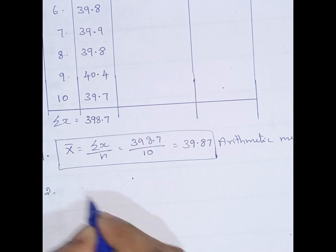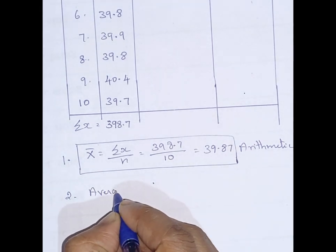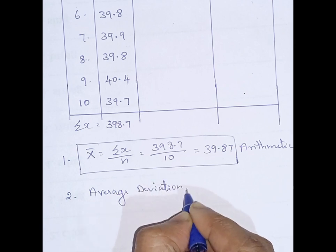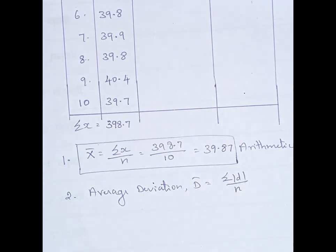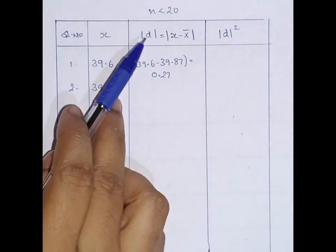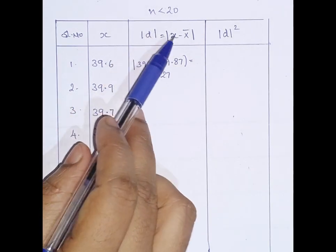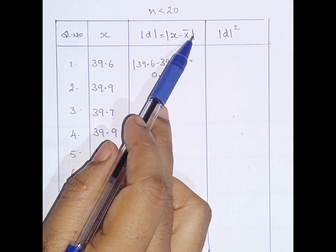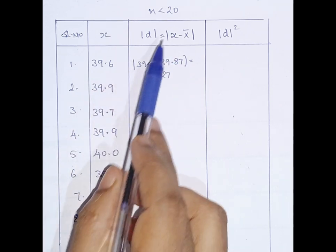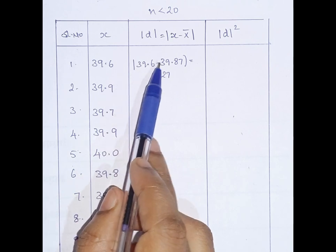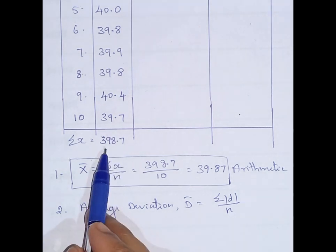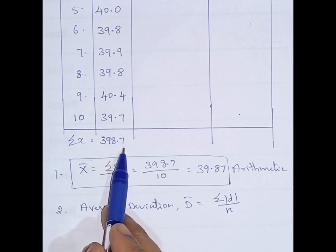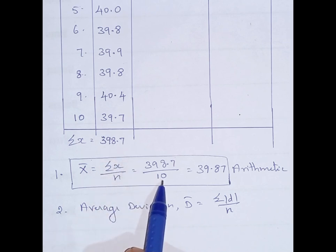The second formula is average deviation. The average deviation formula is D̄ equal to summation of modulus of D divided by n. As we need modulus of D, I have used a modulus of D column. Modulus of D is nothing but modulus of x minus x̄. So for each reading, we find x minus x̄. For the first reading: 39.6 minus x̄, where x̄ is the arithmetic mean — summation of x values is 398.7, divided by n equal to 10.